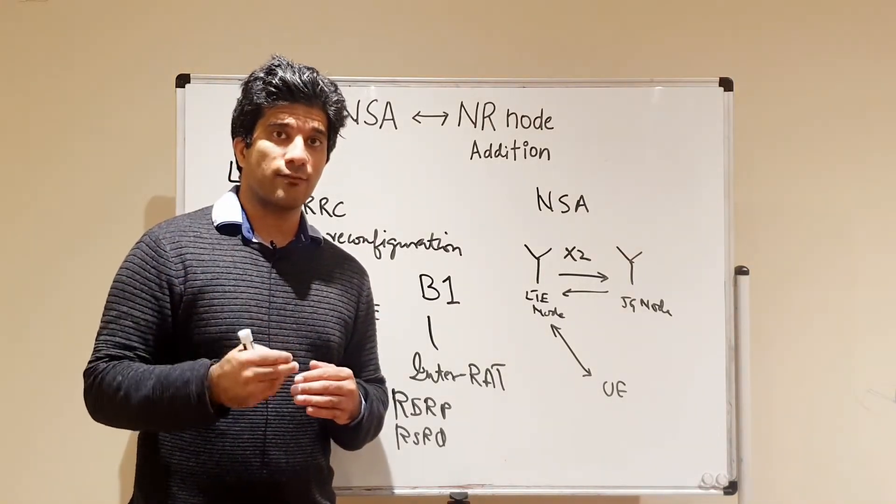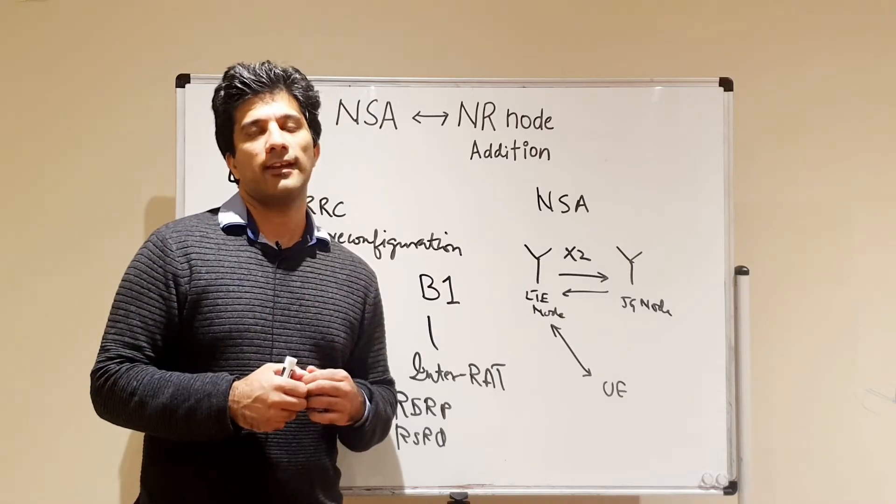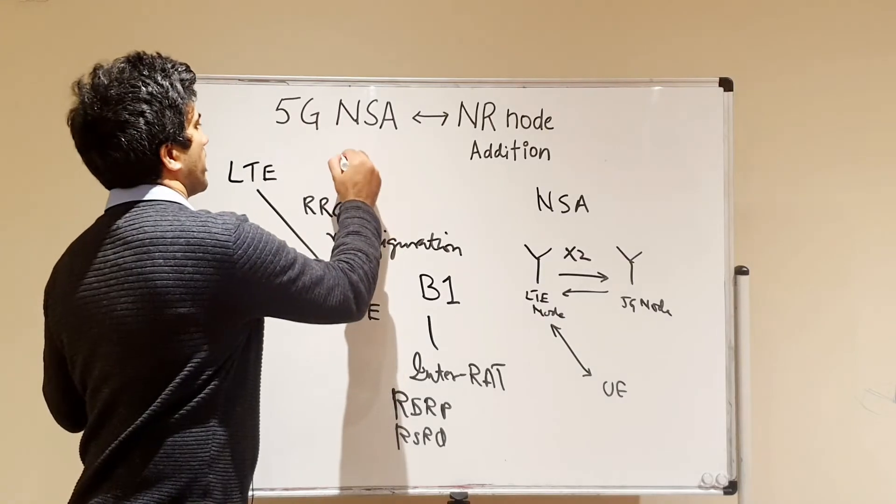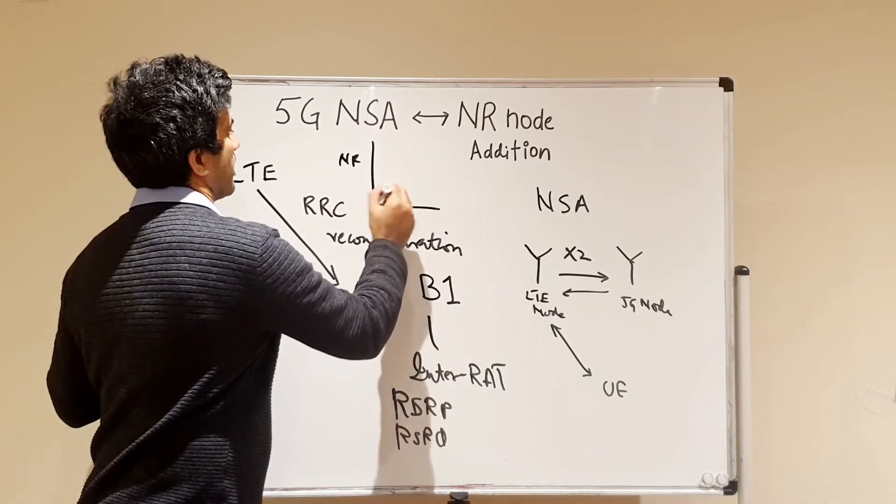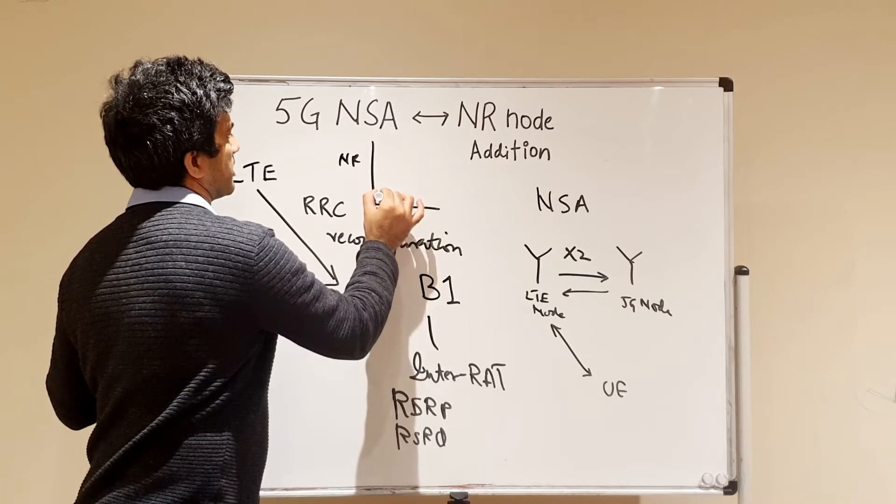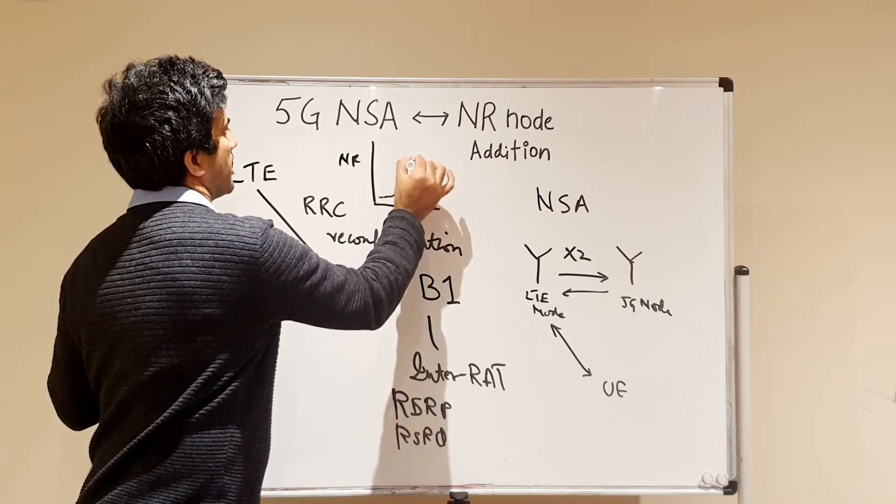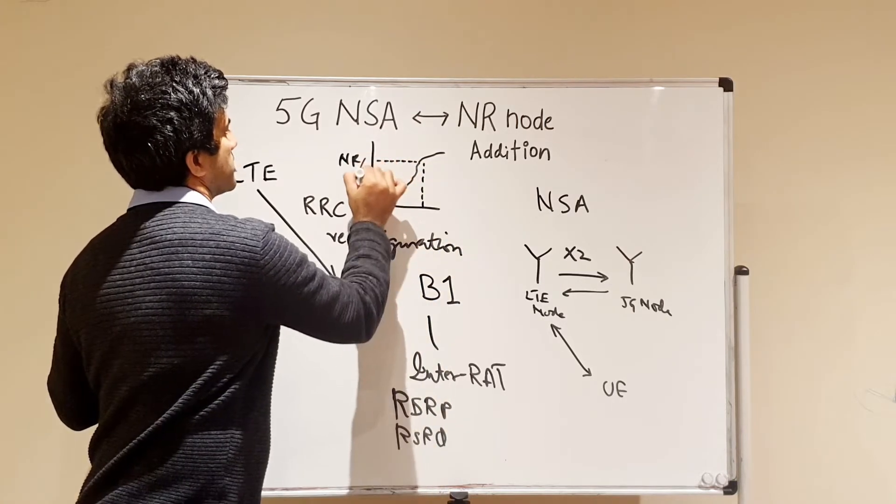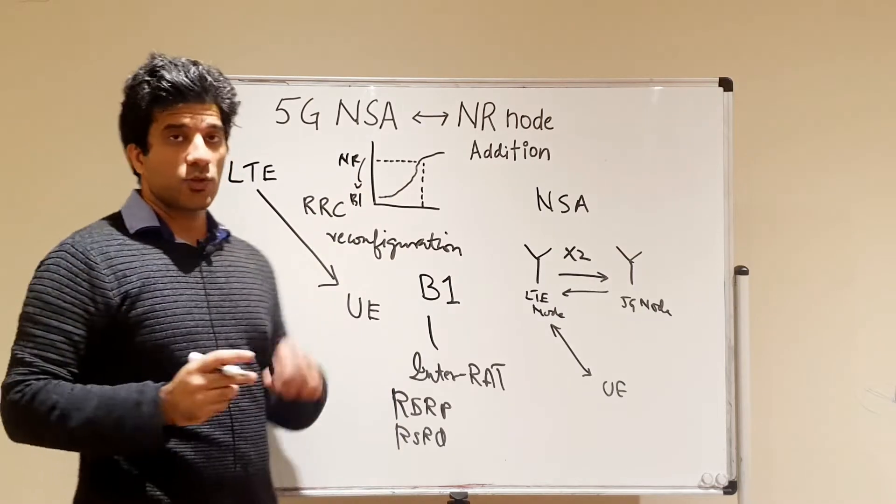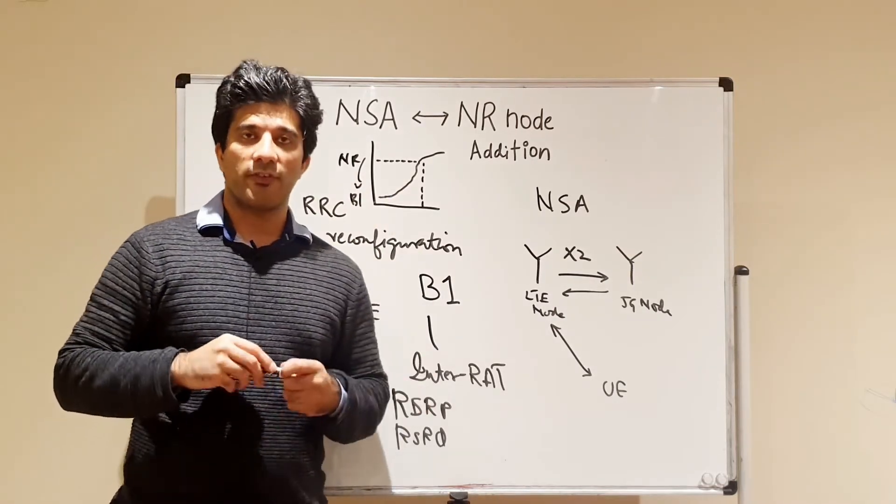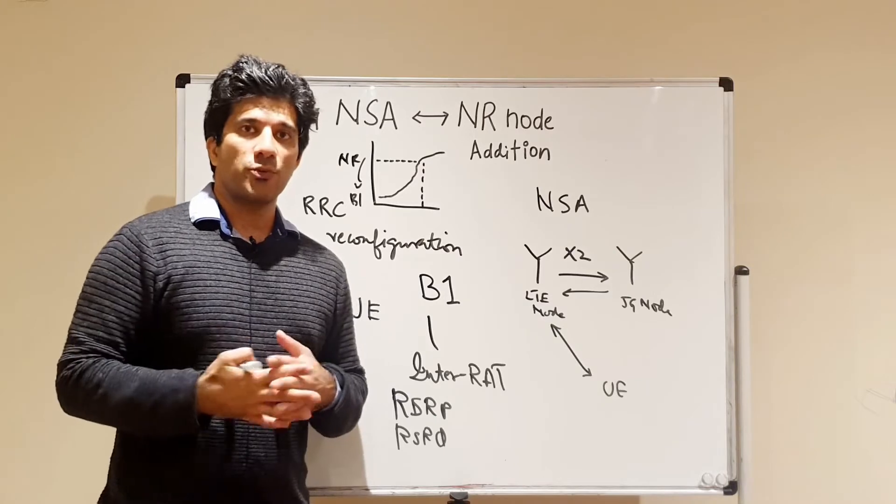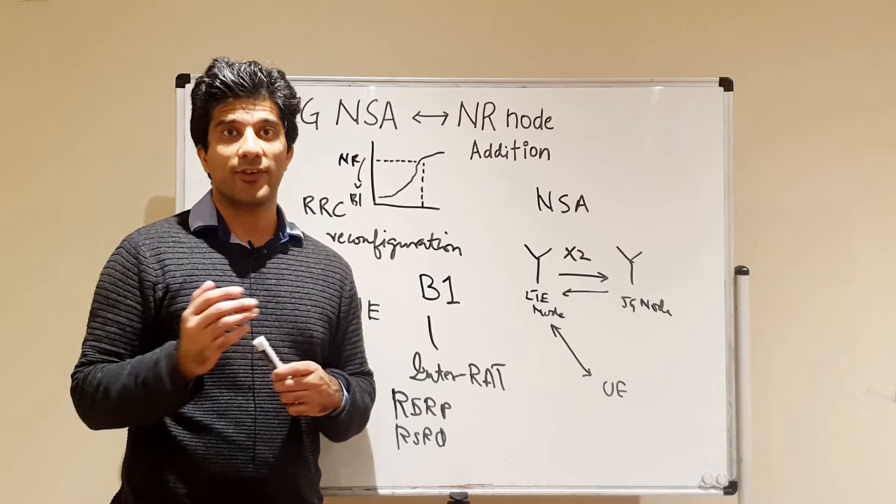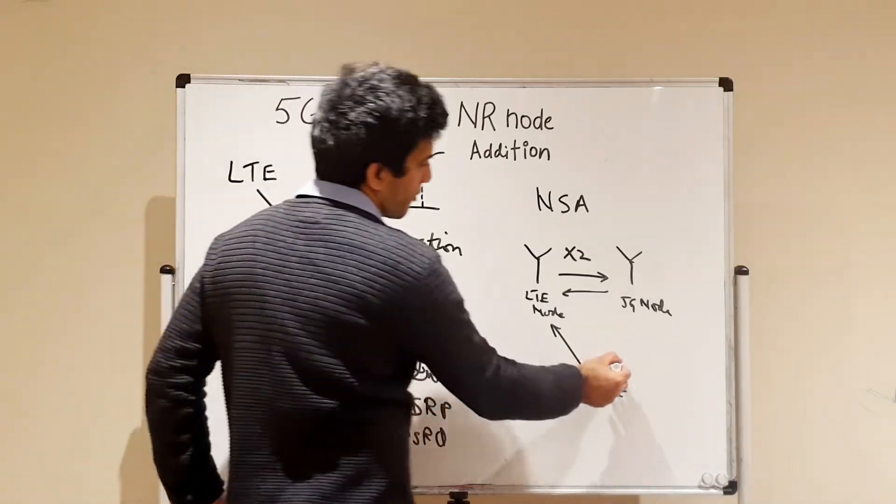It can be -118, it can be -120, it can be -110, it can be anything. That will be the value of that signal when the UE is receiving that signal from the NR cell. Once it starts receiving the signal better, for example this is your NR cell's RSRP, and as the UE moves closer, this is your threshold, this is your B1.